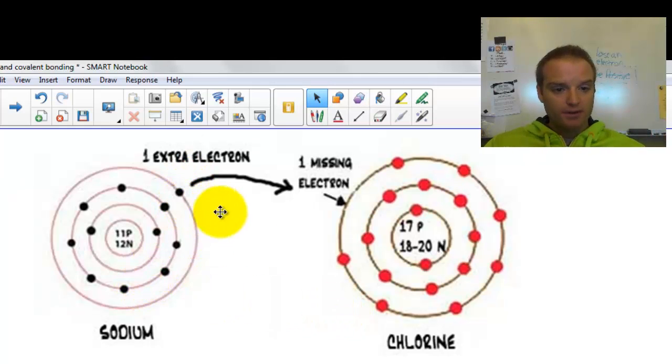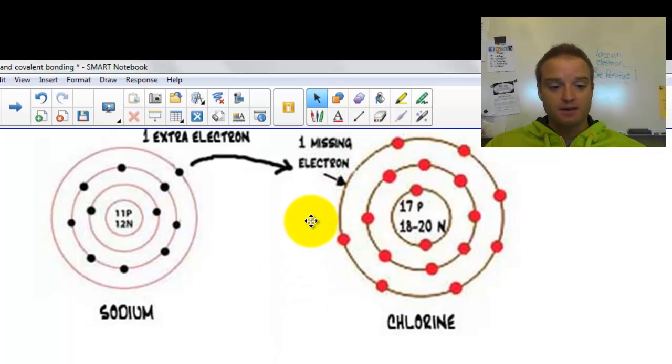So, that one valence electron, this one has one, two, three, four, five, six, seven valence electrons. It wants to be happy at eight. It's most stable when it has eight valence electrons. Sodium will lose this electron and give it to chlorine. Now, that electron shell is gone. Now, the next shell is this one. It's full. It has eight. And now chlorine's happy because it has eight. Now they're happy.